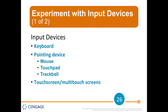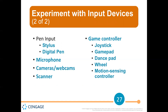A trackball looks like something you see on a video game. I haven't seen a computer with a trackball in a long time, but there are other devices that use a trackball-type piece. Then there's a touchscreen or multi-touch screen — that's like most people's phones. Other input devices include a stylus or digital pen. If you have an iPad, you might have an Apple Pencil. Some Samsung phones come with a stylus. Microphones, cameras, webcams, and scanners are also input devices.